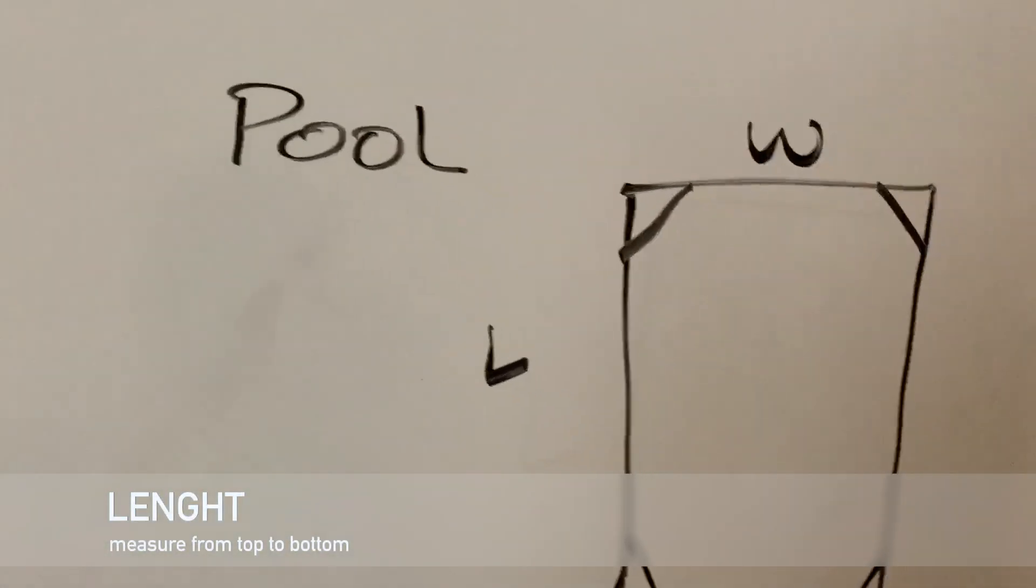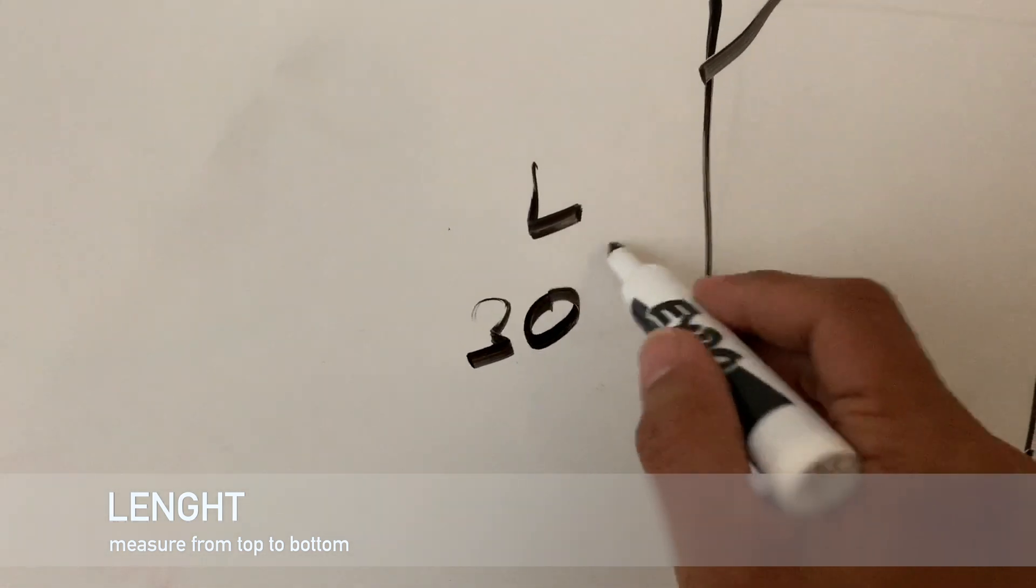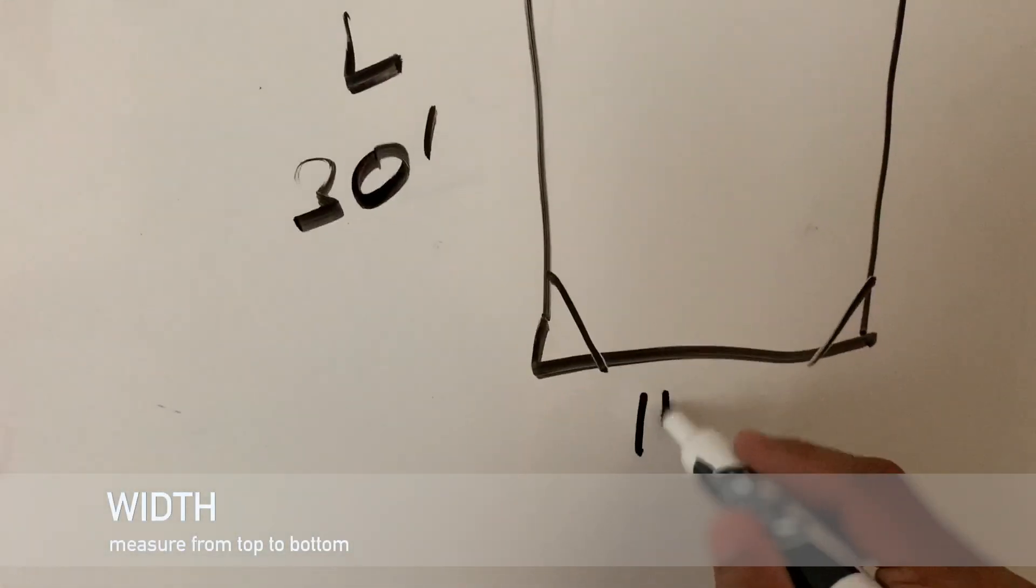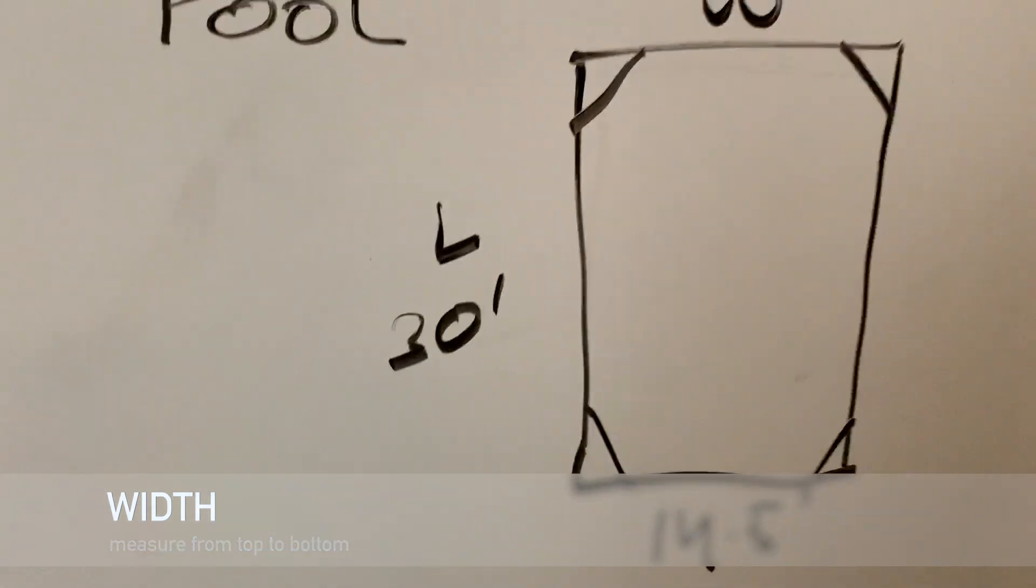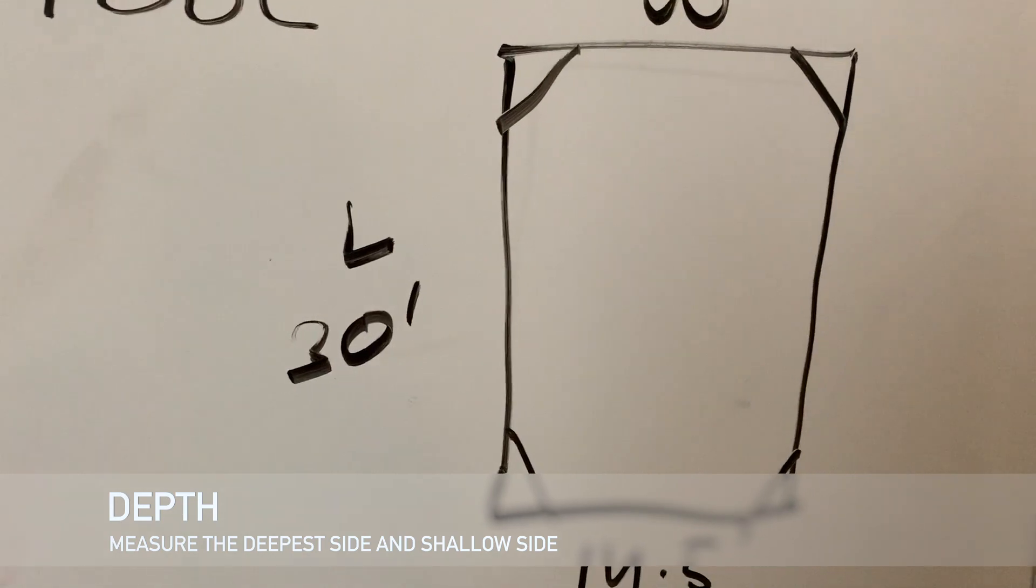In my case, the length of the pool was 30 feet and the width was 14.5 feet. Now what you need to do is measure the average depth.